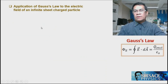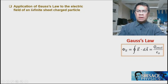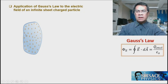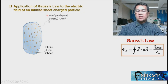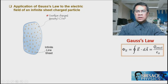Next, we find the electric field from an infinite sheet of charge using Gauss's Law. Consider an infinite sheet extending to infinity in all directions. The charge given is the surface charge density σ, with units of coulombs per meter squared.